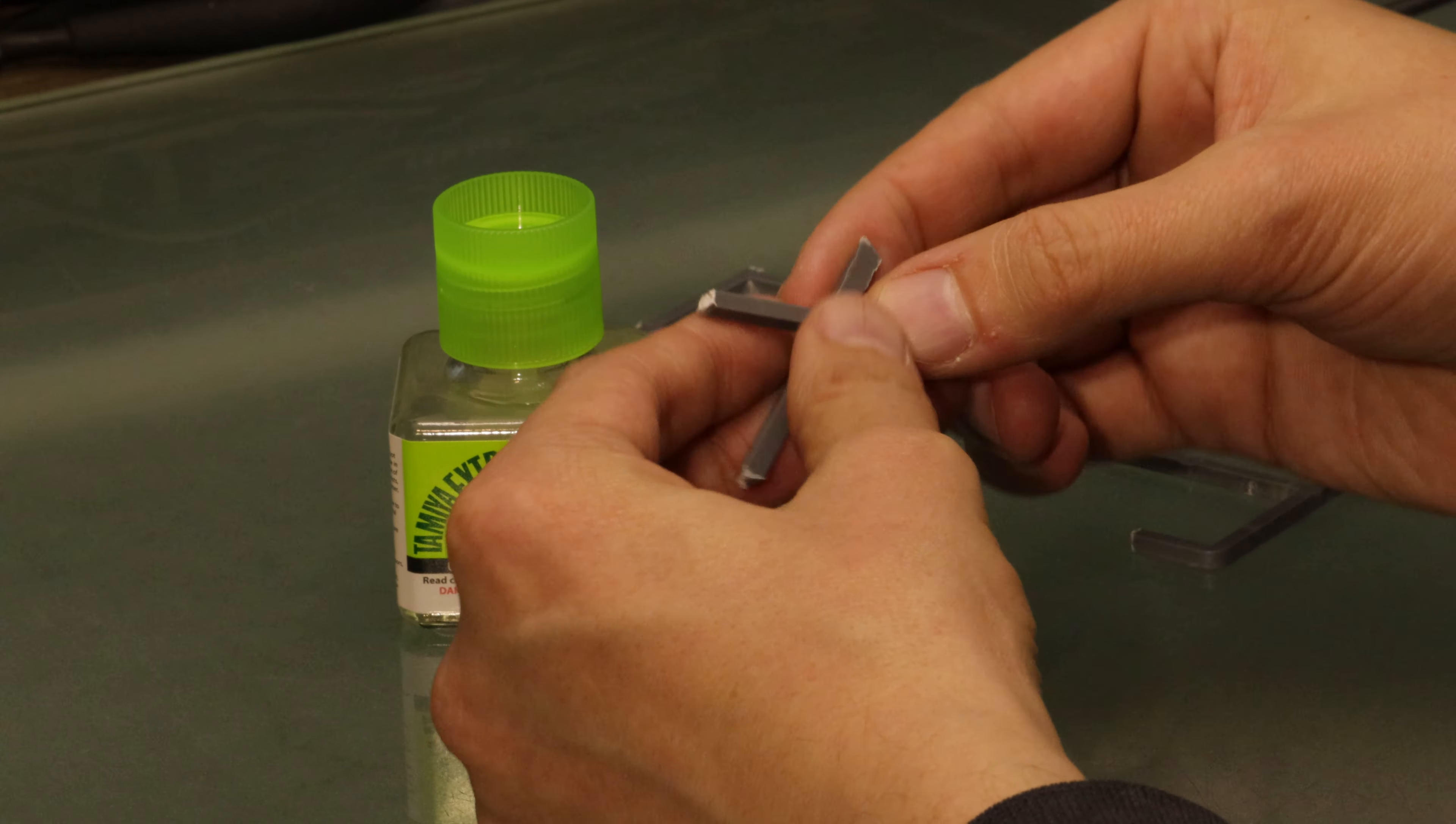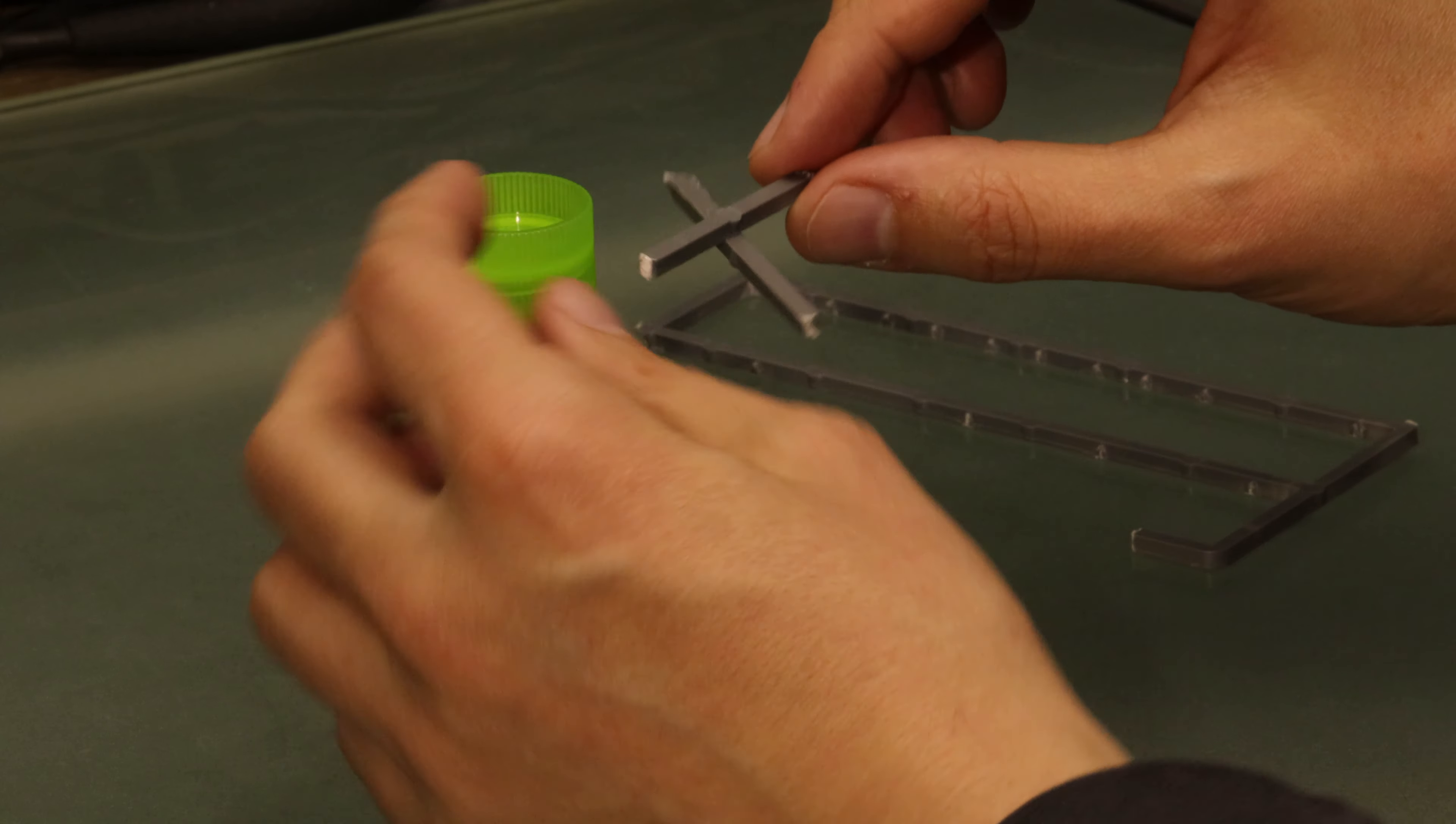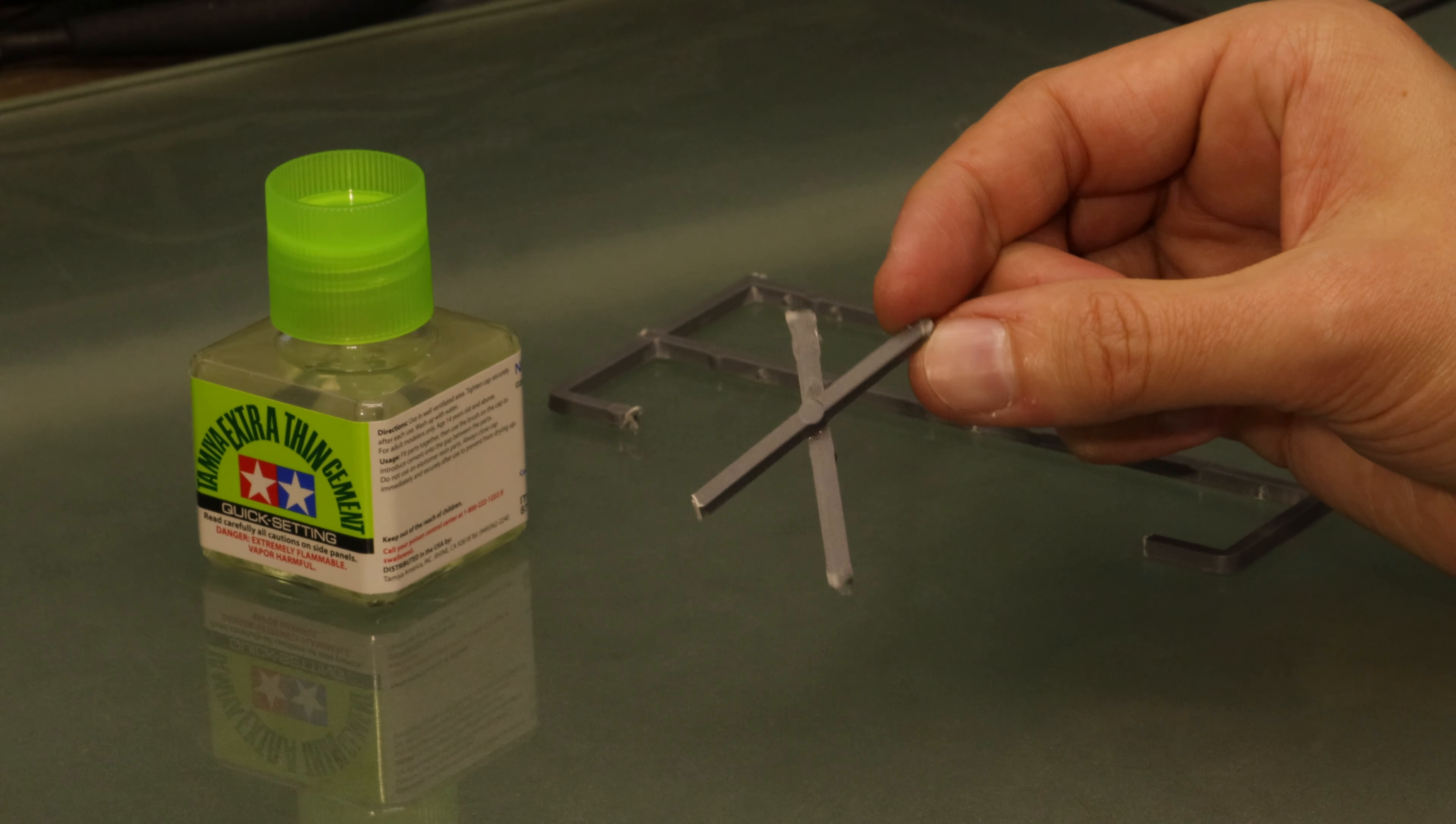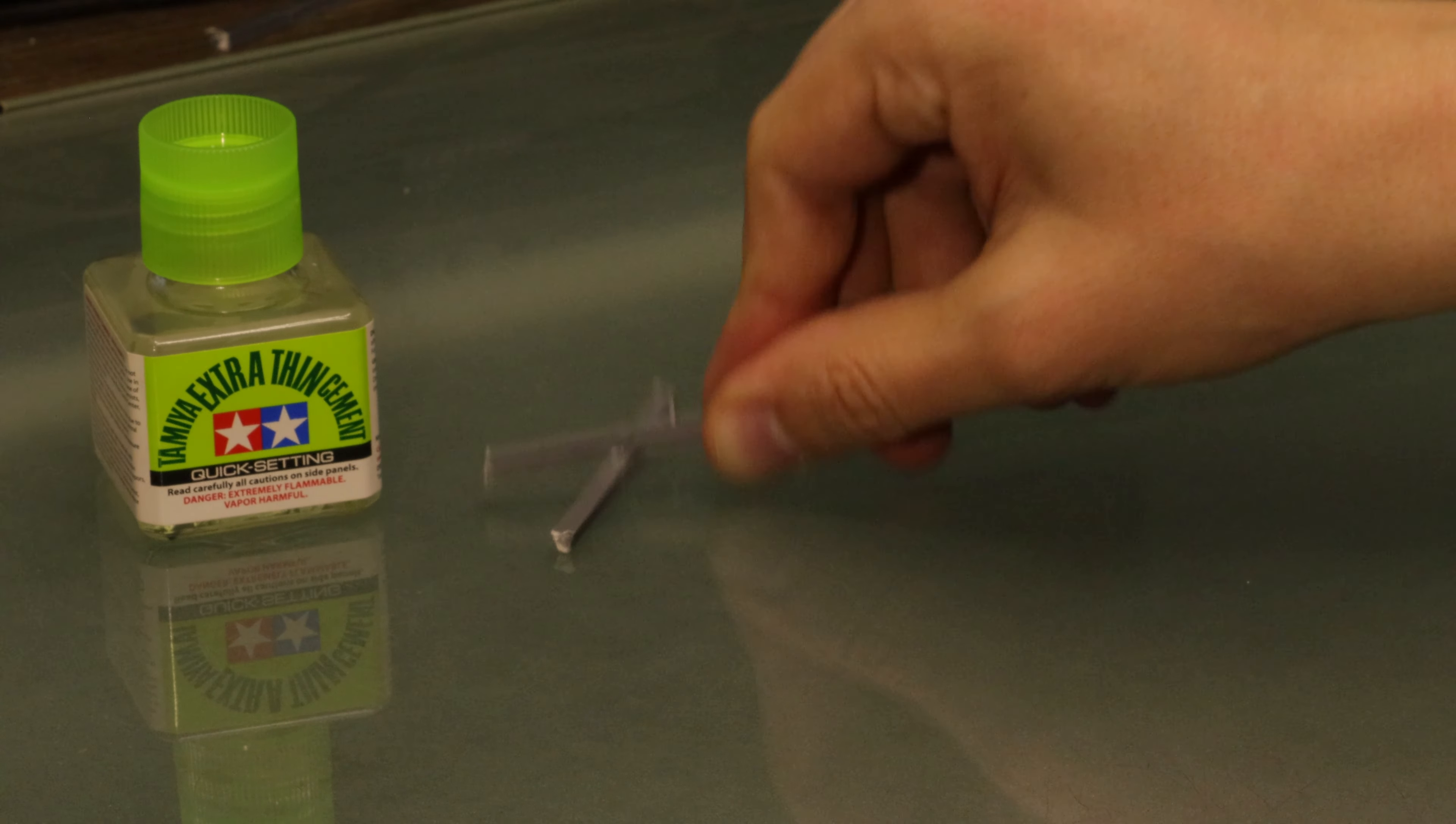This requires extra thin plastic cement. If you haven't used it before, it's a chemical solvent that dissolves the styrene that hard plastic miniatures are made of. So if you put it between two pieces and push them together, the parts will dissolve and mix together, and once the cement evaporates they'll be fused into a single piece.